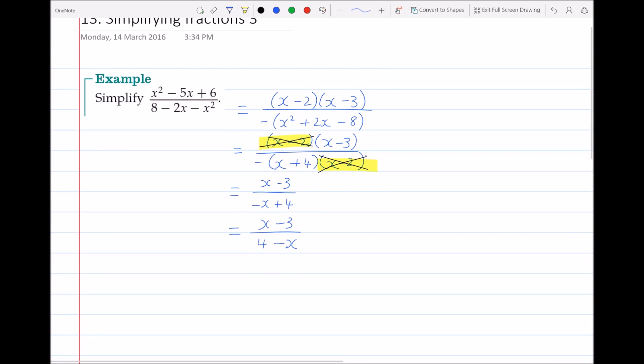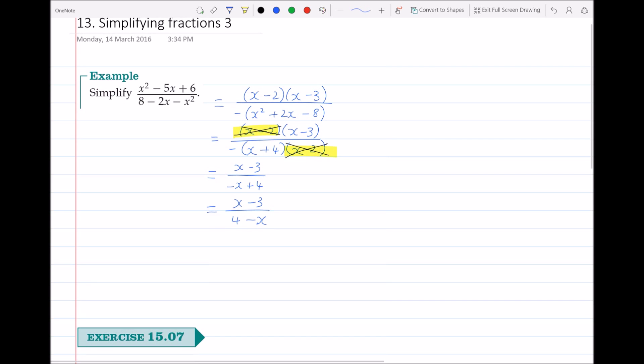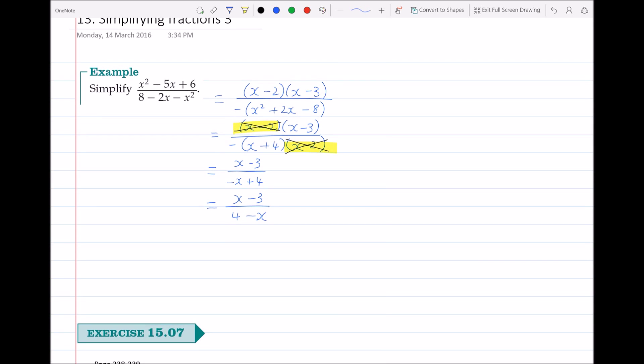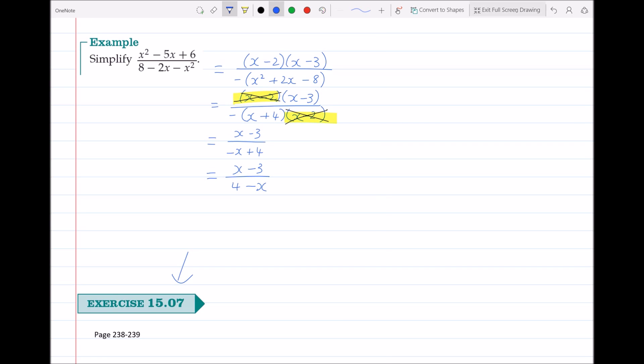When simplifying fractions of this nature, make sure you factorize top and bottom and look for something to cancel out. You can practice some of these on exercise 15.07. Thank you.